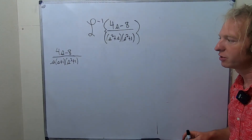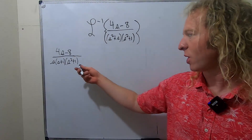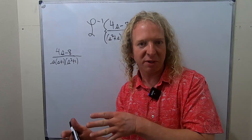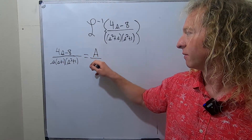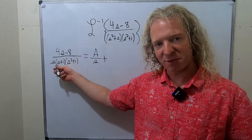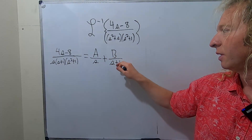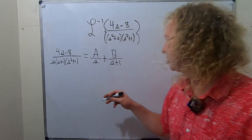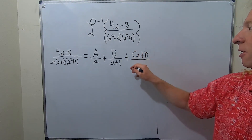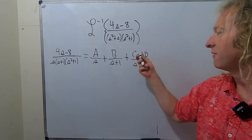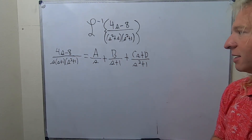When you use partial fractions, if it's linear you just put a constant like A. And if it's a quadratic, you have to have As plus B. So here it's s, so it's just A over s. Plus, here it's s plus 1, so it's B over s plus 1. And then here it's s squared plus 1, so you have to have Cs plus D — whenever it's a quadratic, you have to have that.